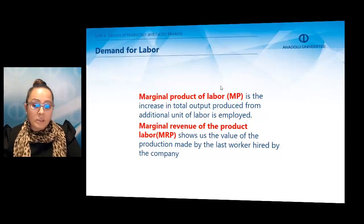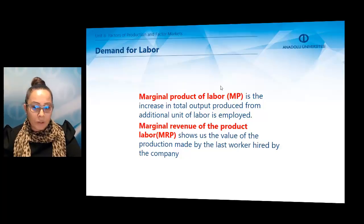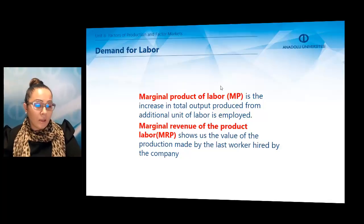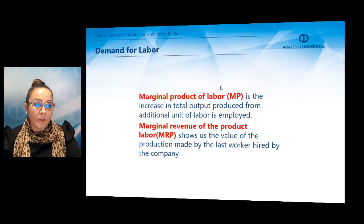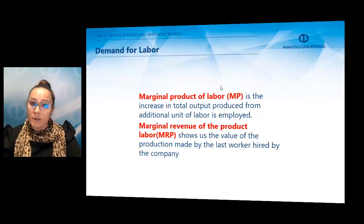Before we talk about the demand for labour, let's look at some key terms. The first is marginal product of labour, abbreviated MP, which is the increase in total output produced when additional units of labour are employed. The second term is marginal revenue product of labour, abbreviated MRP, which shows us the value of the production made by the last worker hired by the company.